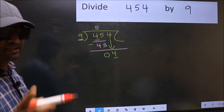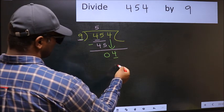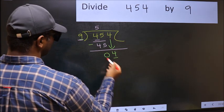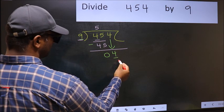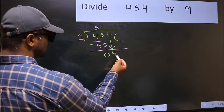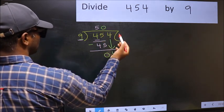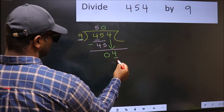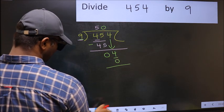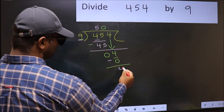Instead, what you should do is: which number should we take here? If I take 1, we will get 9, but 9 is larger than 4. So what we should do is take 0. So 9 into 0 is 0. Now you should subtract. 4 minus 0 is 4.